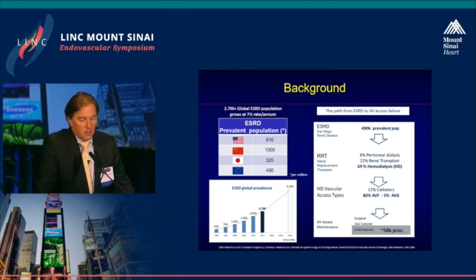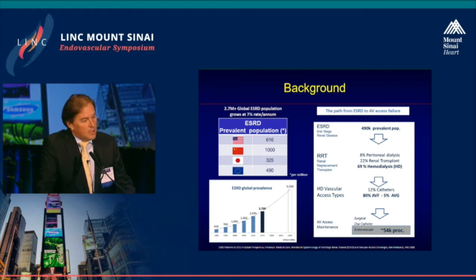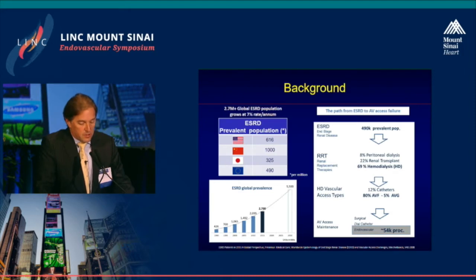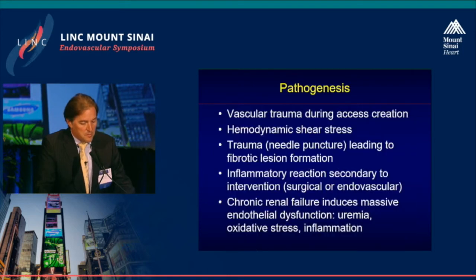We all know that renal failure is a big problem. End-stage renal disease is very prevalent both in the US and in Europe. On the right-hand side of the slide you can see the path from end-stage renal disease to AV access failure. Not all patients require AV access — many are also treated by peritoneal dialysis or renal transplant — but we still have a lot of procedures being done for renal failure, amounting to a cost of $90,000 per year per patient.